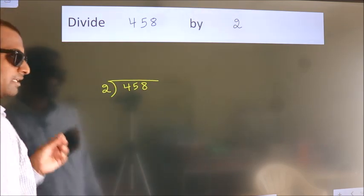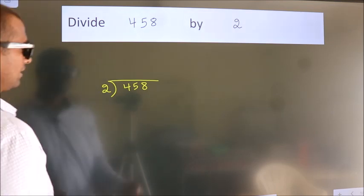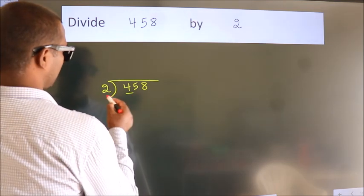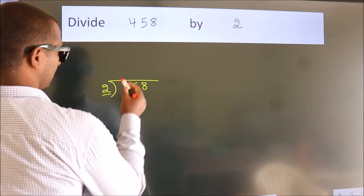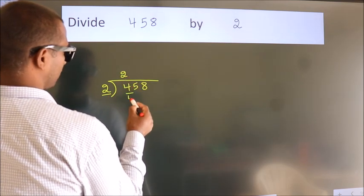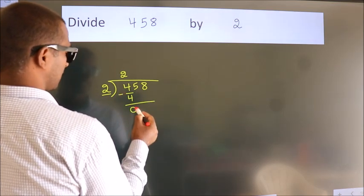This is your step 1. Next, here we have 4, here 2. When do we get 4? In 2 table, 2 2s, 4. Now we should subtract. We get 0.